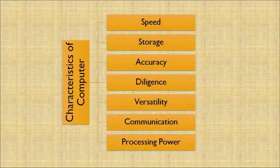Fifth is versatility, meaning there are a number of things which can be done through a computer. Sixth is communication: the computer can be used to communicate amounts through Gmail or any other modes of communication. Last is processing power, which can be correlated to the speed of processing accounting entries.